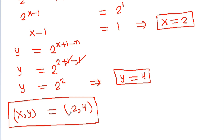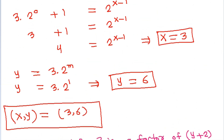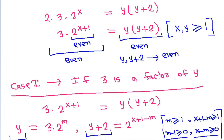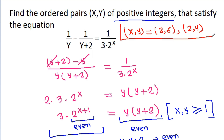Therefore, the ordered pairs (x, y) of positive integers satisfying the equation are (x, y) = (2, 4) and (x, y) = (3, 6). Thank you.